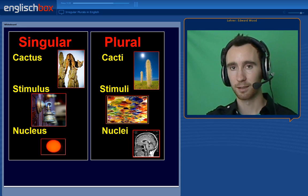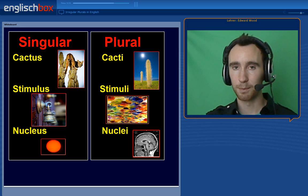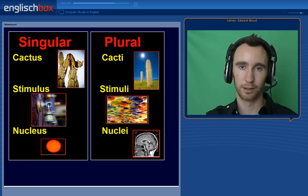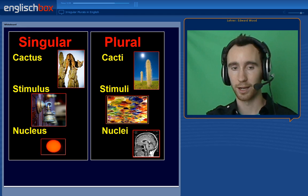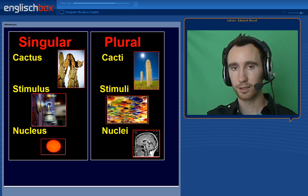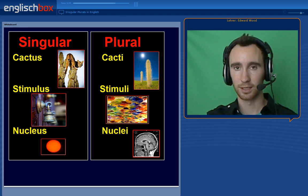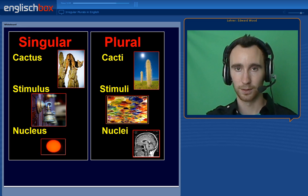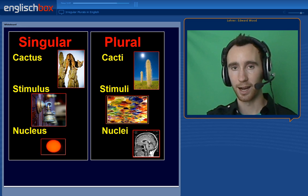Colours can stimulate different emotions; there are different types of stimuli. One nucleus — the central point of something, normally the central point of a cell, the control centre — and many nuclei.